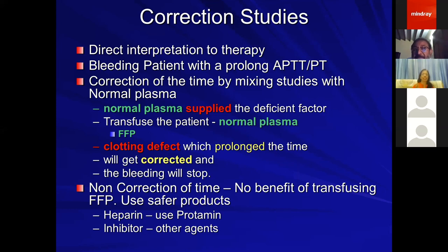Without mixing studies, you cannot transfuse anybody appropriately. Non-correction is important information telling you there is no point in transfusing FFPs. Instead, identify the cause and use safer, targeted products — such as protamine if heparin is identified, or other agents if it's an inhibitor.